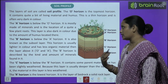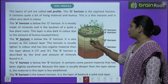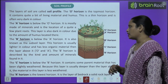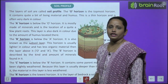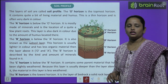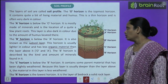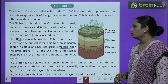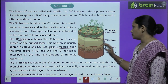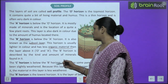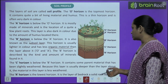Next comes the B horizon. This is just below the A horizon, and it is also known as the sub-soil layer. This horizon is usually lighter in color and has less organic material. The B horizon is described by the kind and amount of minerals found in it.